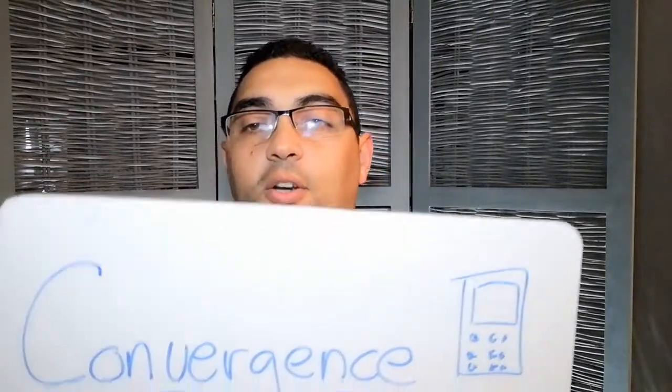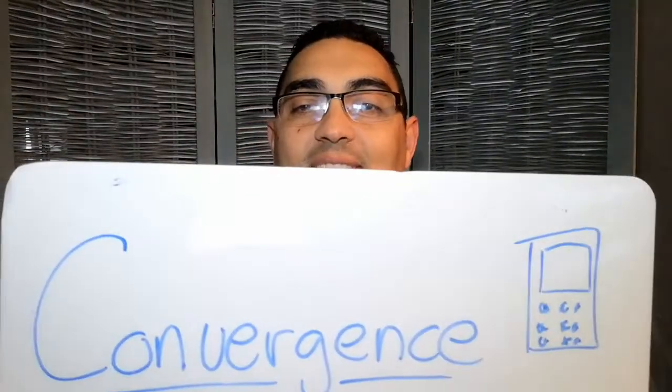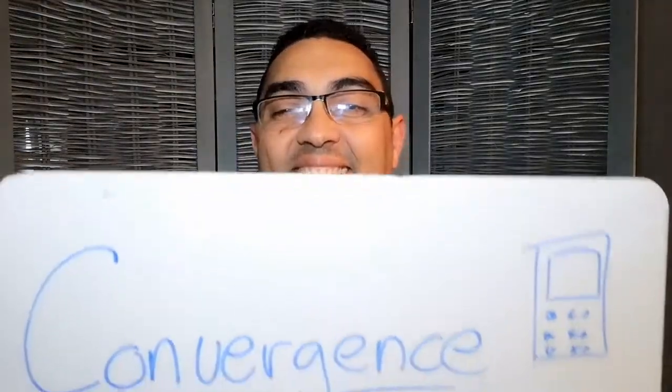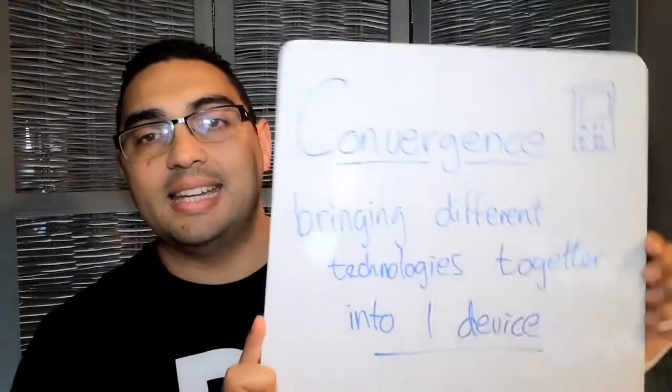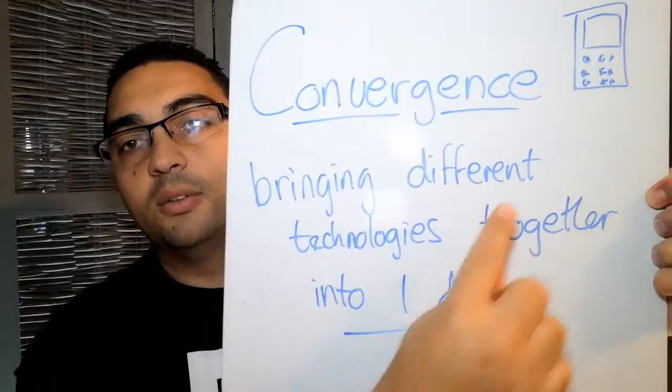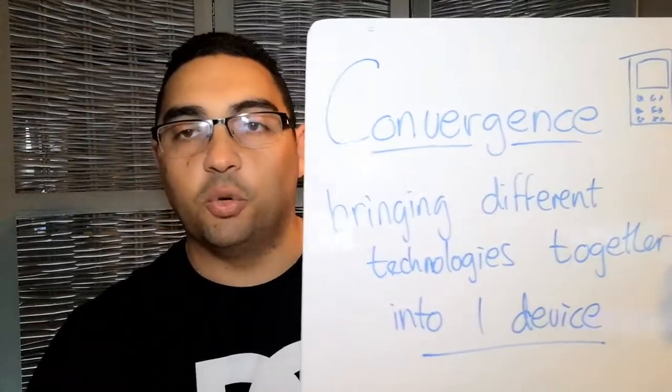The next term is convergence — I've got a little picture of a cell phone here. When we think of converging, we're talking about coming together. If I say all learners are going to converge on the hockey field, it means we're all going to that one place. So convergence is the bringing together of different technologies into one device.